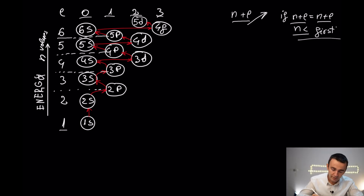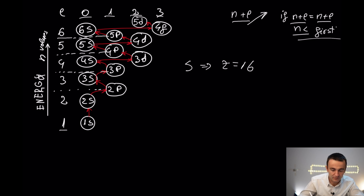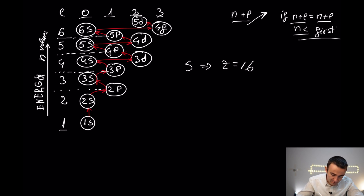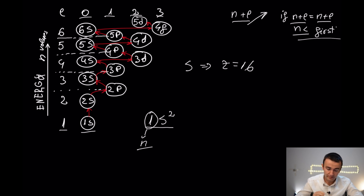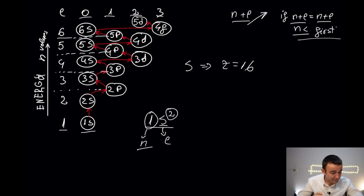We are going to start with sulfur, which has an atomic number equal to 16, meaning it has 16 electrons in its current state. So first it's going to fill 1s2. The '1' here represents n, the principal quantum number; 's' is the angular momentum quantum number l; and '2' is the number of electrons in that subshell.